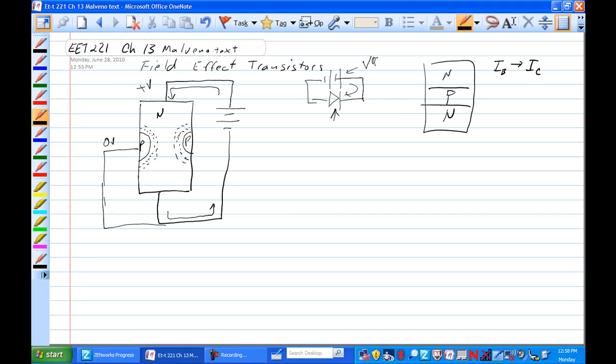So what if we were to put a source in here like so, variable source, and we were to crank this down to, let's say this comes up to minus one volt. Well, this depletion region would get wider.